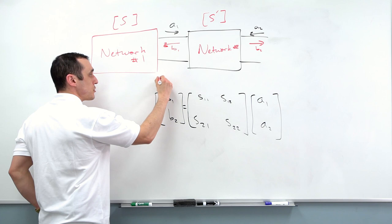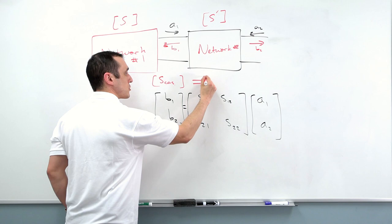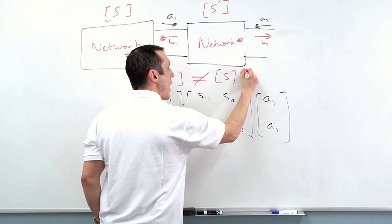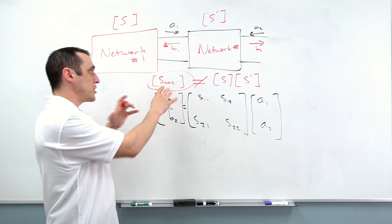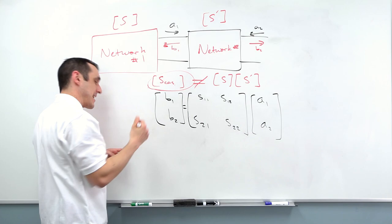As it turns out, you can form cascaded S-Parameters, we'll call that S-Cas, but it is actually not equal to the product of these two S-Parameter matrices. So I can't just multiply my S-Parameter values together to get a cascaded matrix. What I'm going to do here in just a moment is show how you can actually break these down into another parameter set in order to get this cascaded matrix.